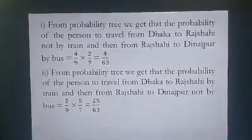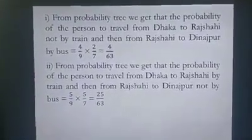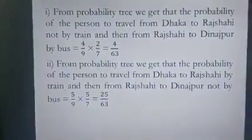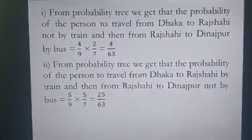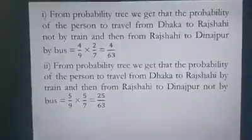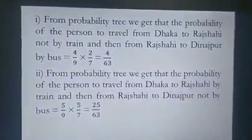The second question: what is the probability that the person travels from Dhaka to Rajshahi by train and then from Rajshahi to Dinajpur not by bus? The probability of going from Dhaka to Rajshahi by train is five-ninths, and the probability of not traveling by bus from Rajshahi to Dinajpur is five-sevenths. Multiplying both gives twenty-five over sixty-three. That is the solution to problem 15 using the probability tree diagram.